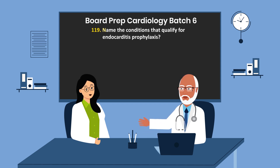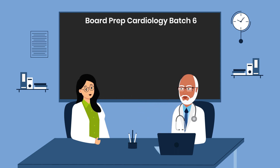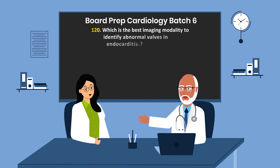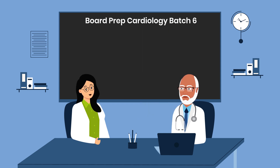Question 119. Name the conditions that qualify for endocarditis prophylaxis. Dental procedures involving blood, procedures involving the respiratory mucosa, and procedures involving infected skin or musculoskeletal tissues. Question 120. Which is the best imaging modality to identify abnormal valves in endocarditis? Transesophageal echocardiogram.